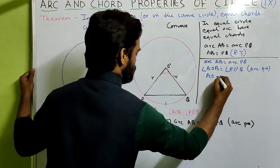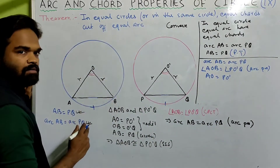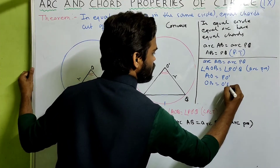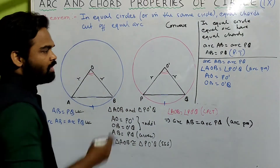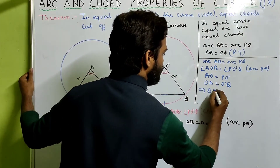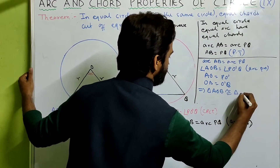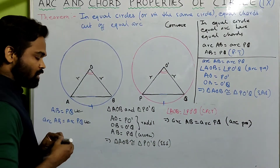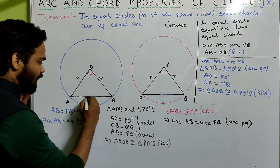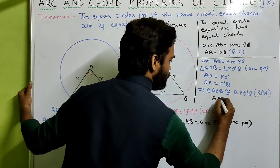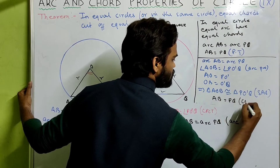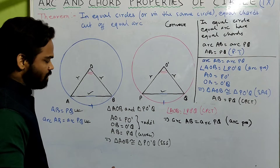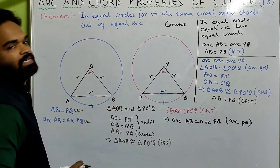AO equals PO' and OB equals O'Q since the circles are equal and the radii are equal. Therefore triangle AOB is congruent to triangle PO'Q by SAS. If these two triangles are congruent, then AB equals PQ by CPCT. That's the converse: if the length of the arc is the same in equal circles or in the same circle, then the length of their chords will also be the same.